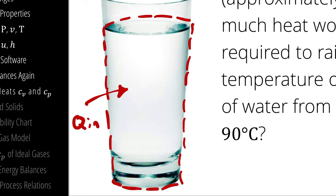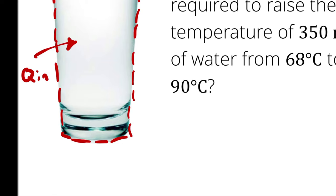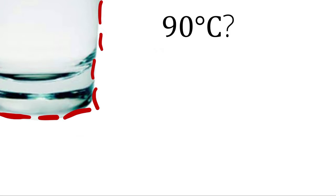If I were to make some sweeping assumptions — the density of our water doesn't change, therefore as the temperature changes the volume doesn't change, there are no work opportunities — and if I were to neglect any heat transfer in the outward direction and just call it Q_net, the thing I'm solving for, and neglect any changes in kinetic or potential energy, my energy balance would simplify down to Q_net equals mass times (U2 minus U1).